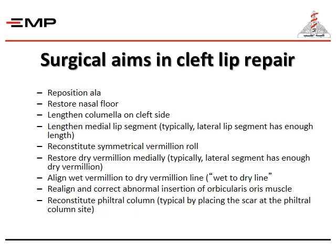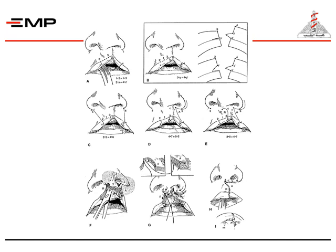The surgical aims in cleft lip repair include: repositioning of the ala, restoring the nasal floor, lengthening the columella on the cleft side, lengthening the medial lip segment (the lateral lip segment typically has enough length), reconstituting a symmetrical vermilion roll, restoring dry vermilion medially (the lateral segment typically has enough), aligning wet vermilion to dry vermilion line, realigning and correcting abnormal insertion of the orbicularis oris muscle, and reconstituting the philtral column — typically by placing the scar at the philtral column side.